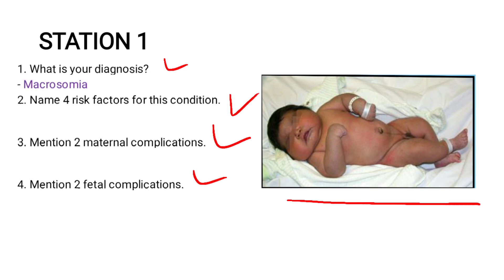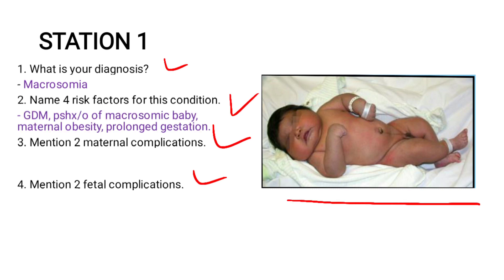The diagnosis here is macrosomia. The four risk factors for this condition are: gestational diabetes, where the mother would have had gestational diabetes; previous history of gestational diabetes; previous history of a macrosomic baby; maternal obesity; and prolonged gestation.